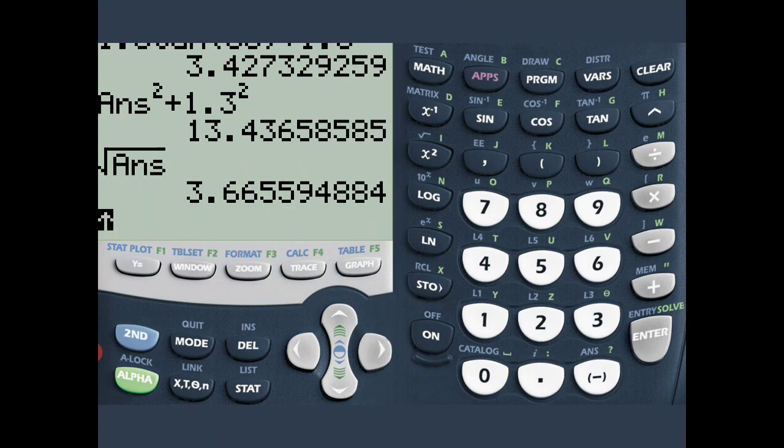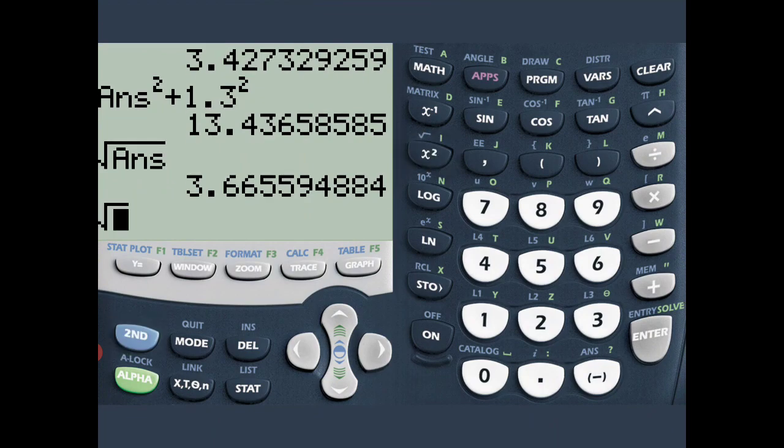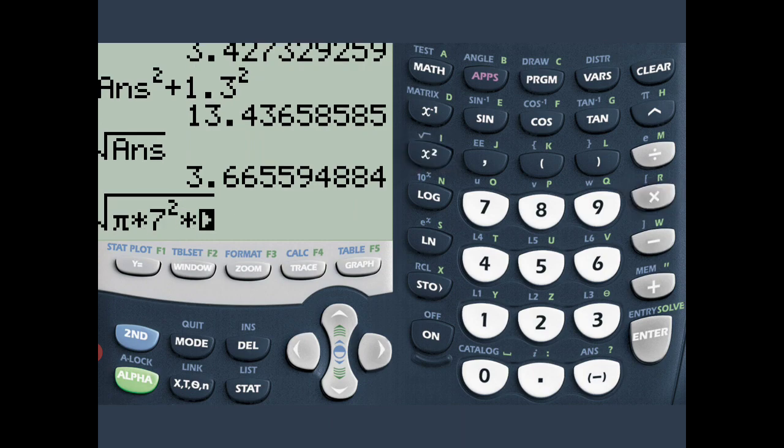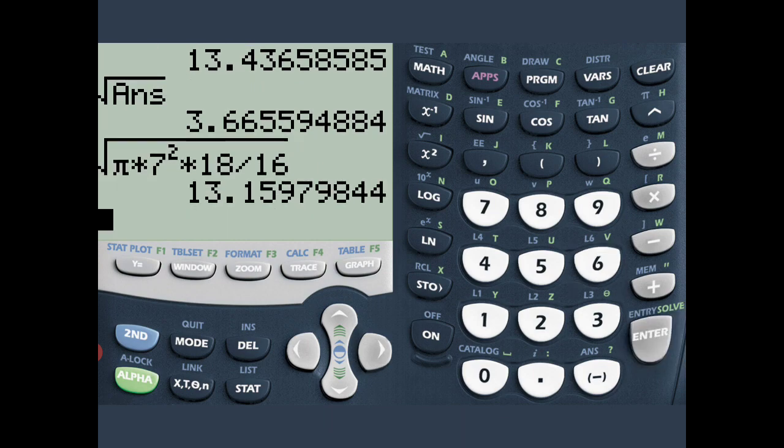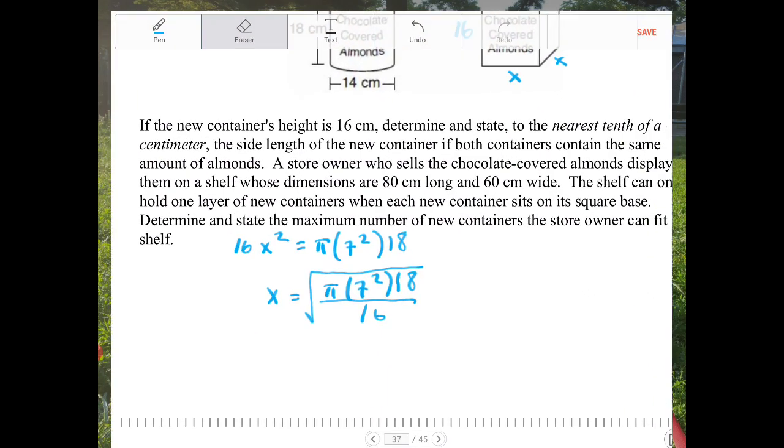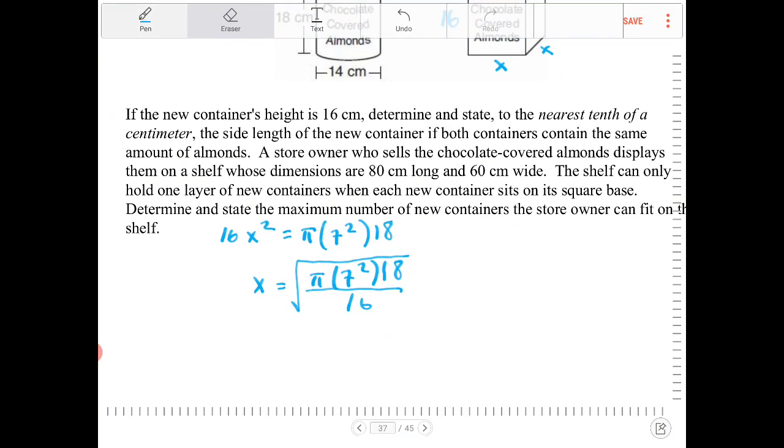So I have the square root of pi times 7 squared times 18, divided by 16. And that would be 13.1597, or 13.16, approximately. So x will equal to 13.16.